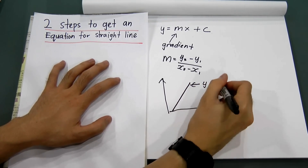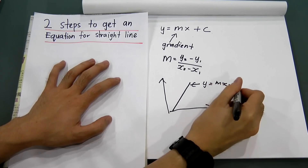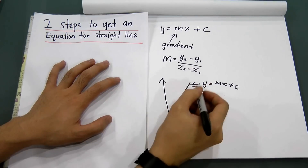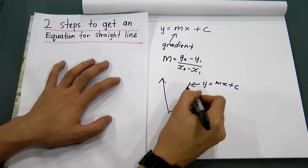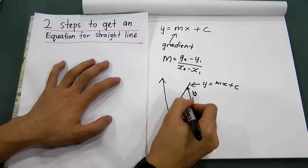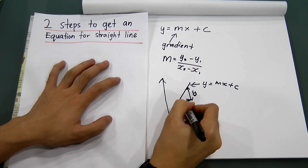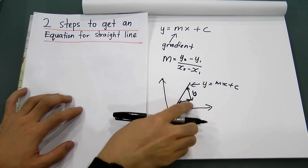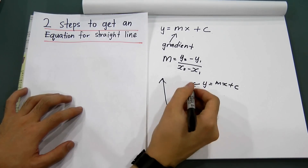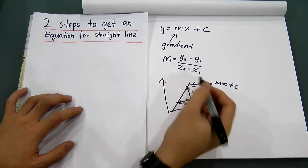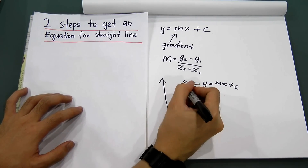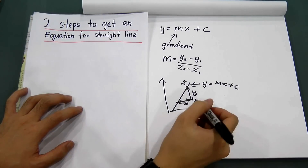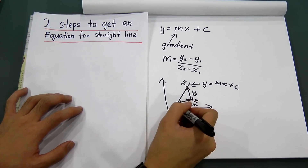In a graph with the equation y equal to mx plus c, if you want to find the gradient of this straight line, you have to find the change of y divided by the change of x. Therefore, you use two coordinates with y2 minus y1 divided by x2 minus x1.